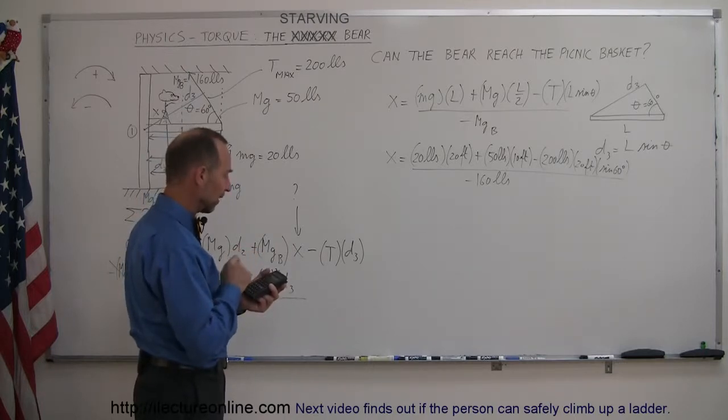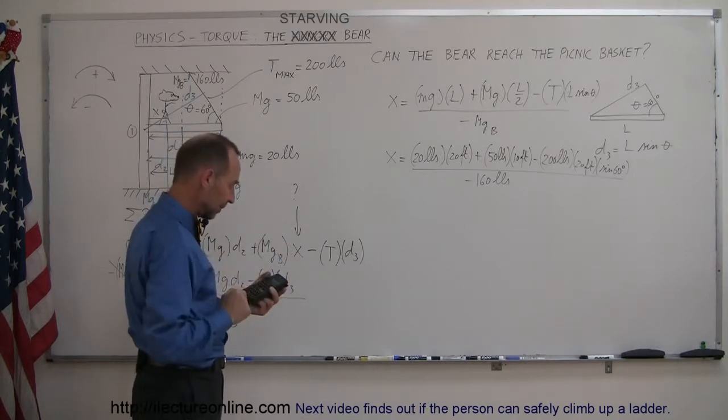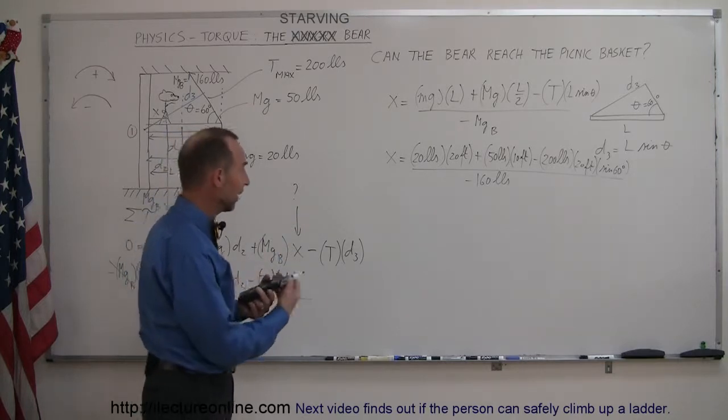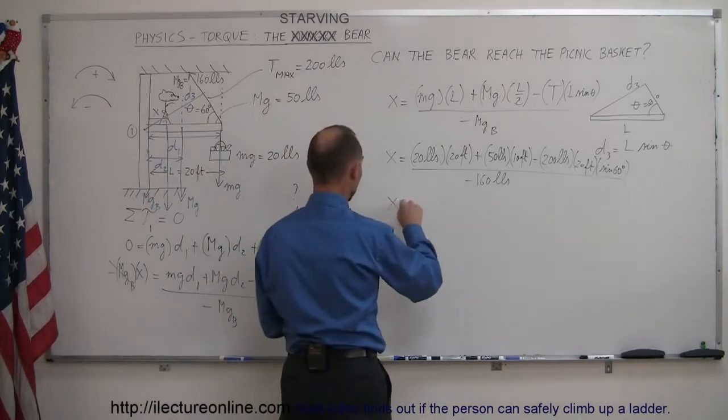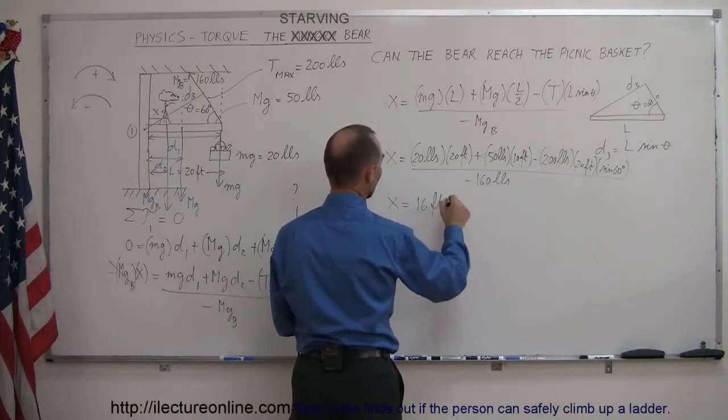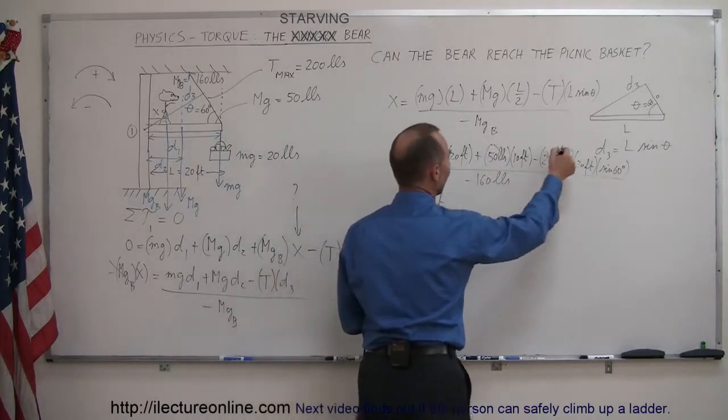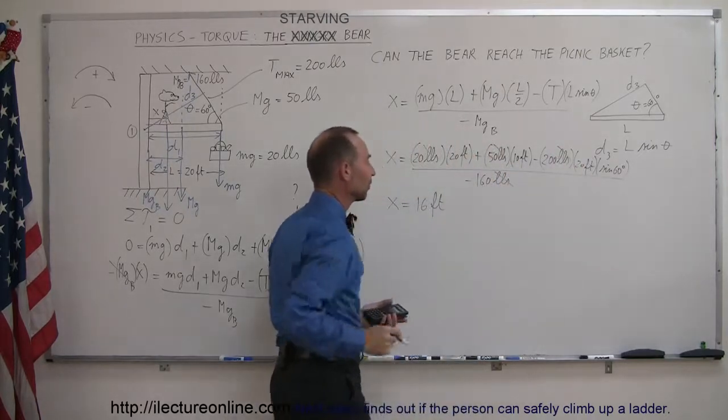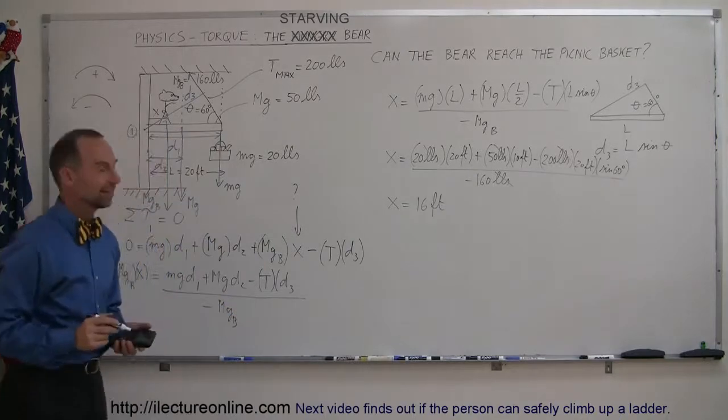So now I have minus 2,564 in the numerator. I divide that by minus 160 equals, and we have X is equal to 16 feet. Notice that pounds cancels out everywhere and we're just left with feet. 16 feet.